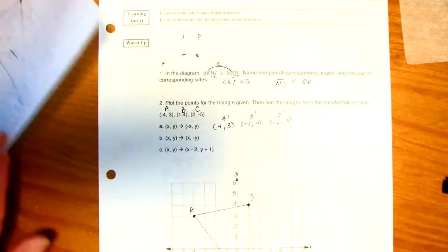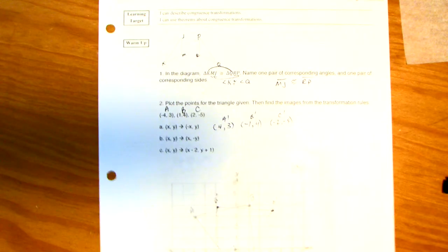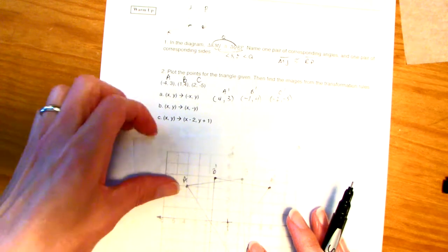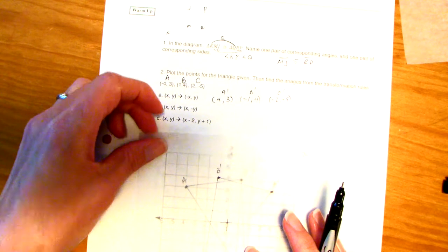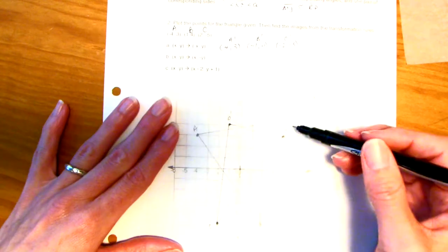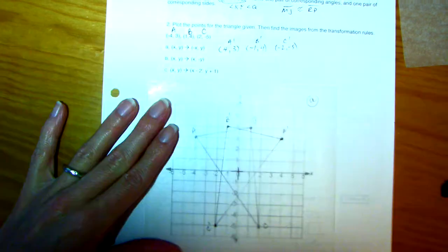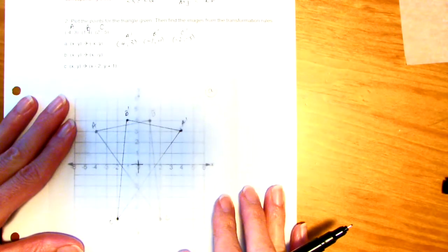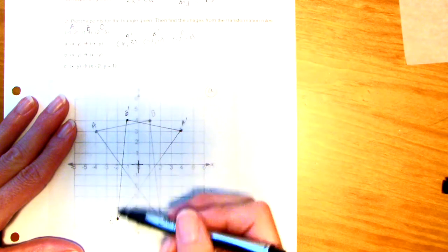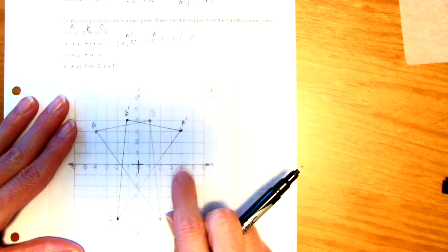On your tracing paper, go ahead and plot those points. Notice what I have done. That little cross there is going to be where my origin is. I went ahead and plotted these points. Let's see if I plotted them correctly. A prime I should have at 4, 3. Over 4, up 3. And then B prime, negative 1, 4. And then C prime, negative 2, negative 5. So here's my part A.